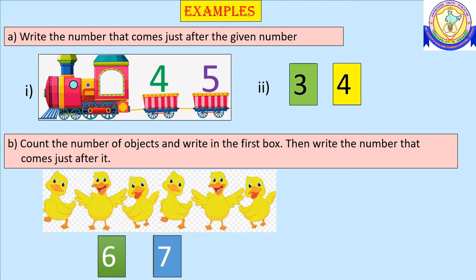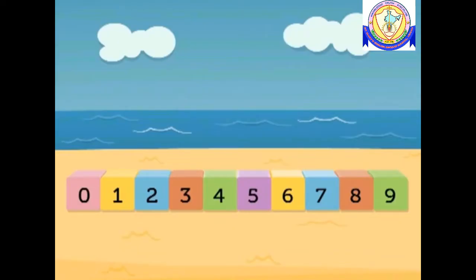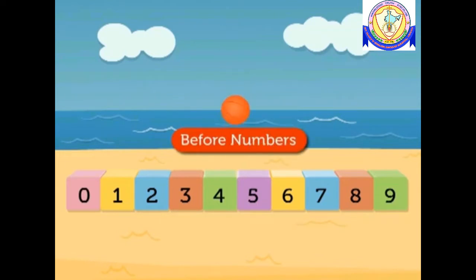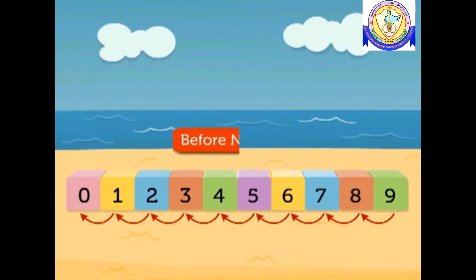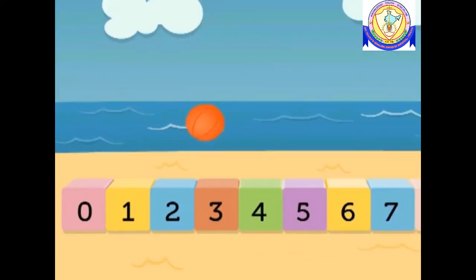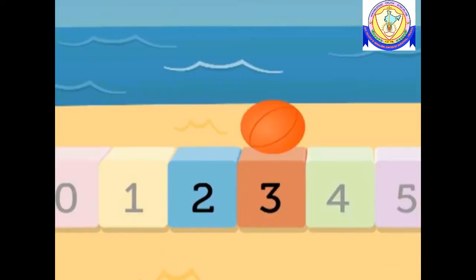Now let's see what we mean by before numbers. When we count backwards from a given number, we get the numbers before. Where is the ball? It is on number three. Which number will you get when you count backwards?